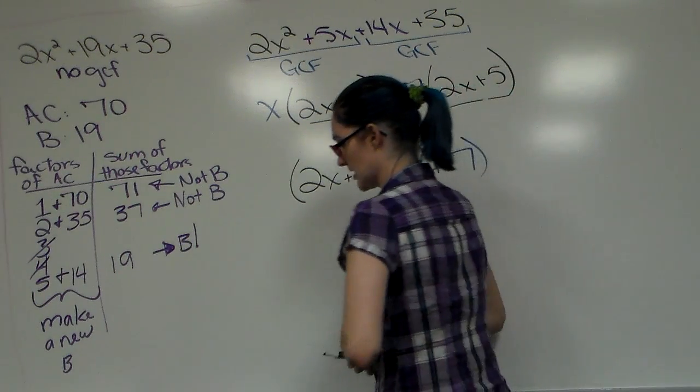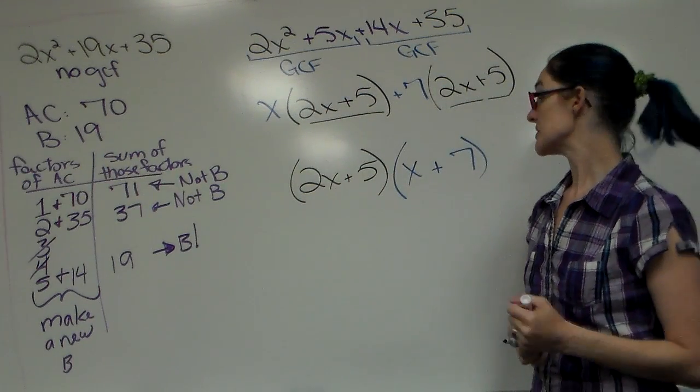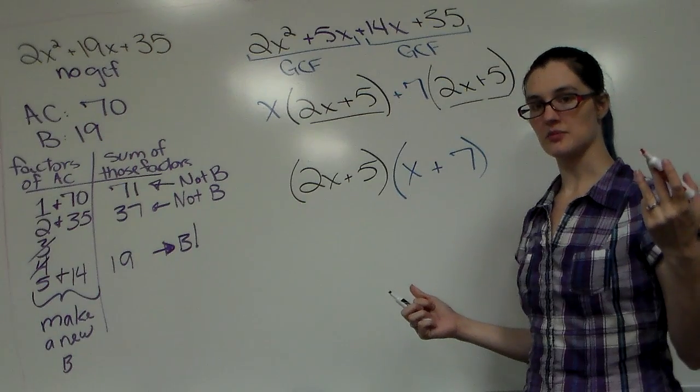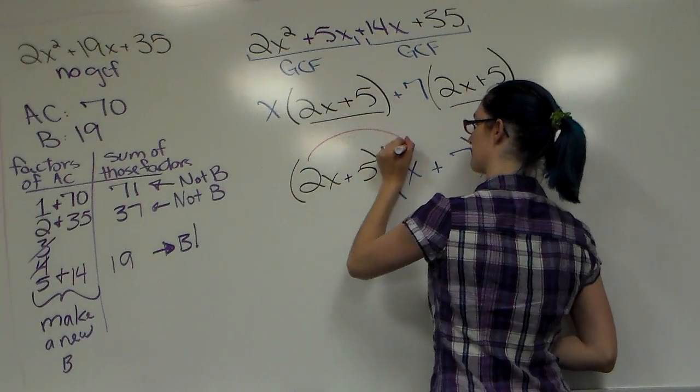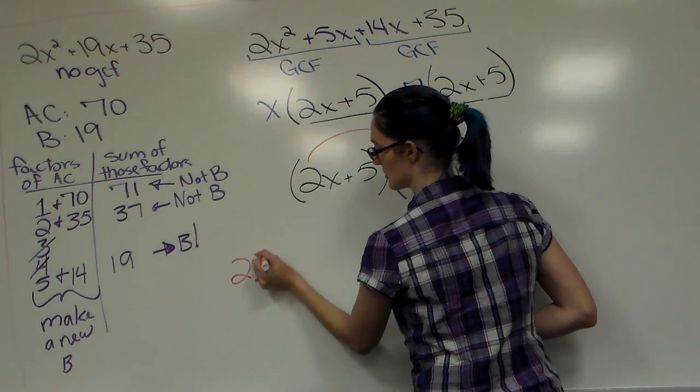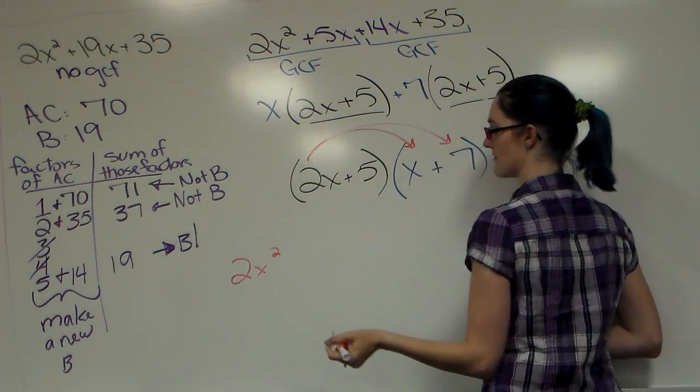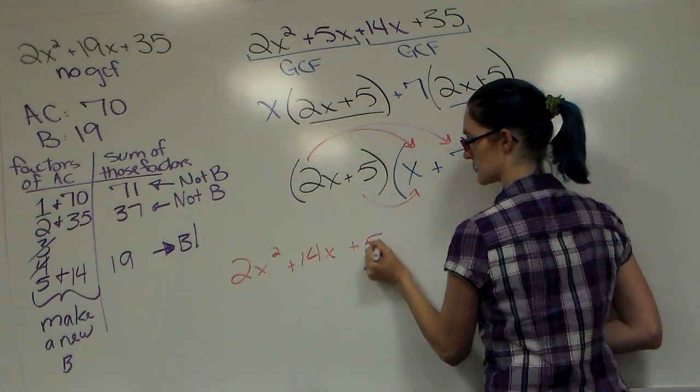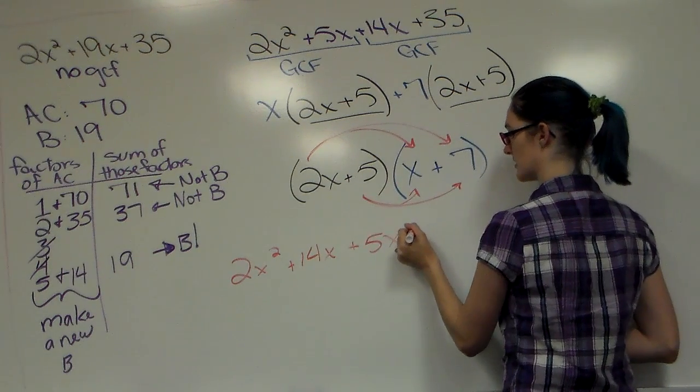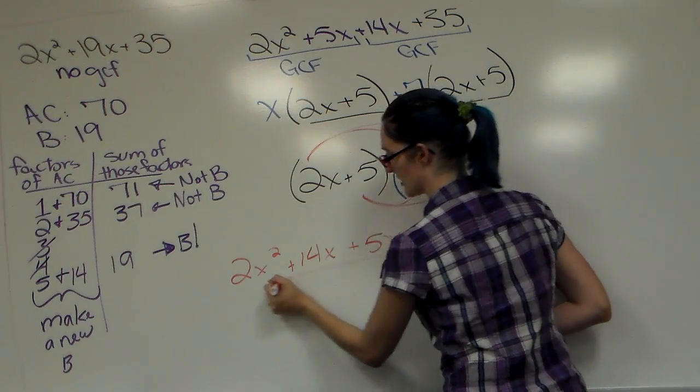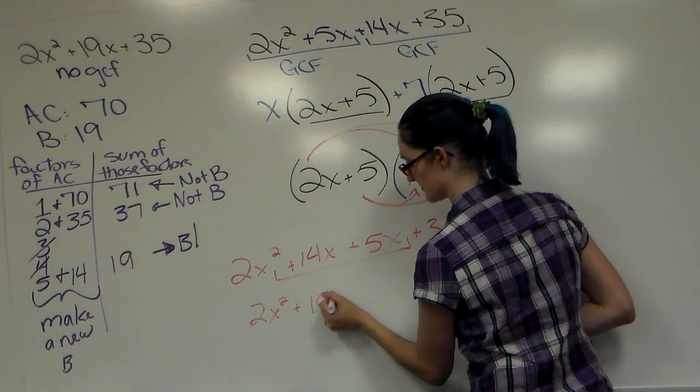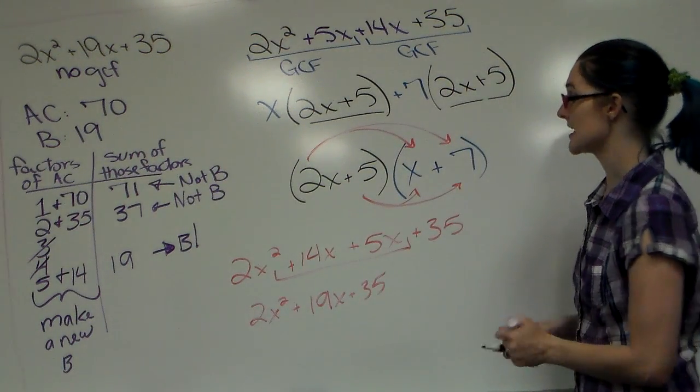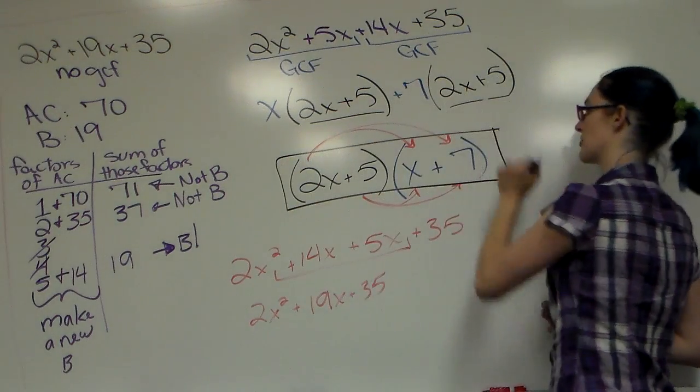Then you have it factored. But factoring is something we struggle with, so it's extremely important that you know how to check your work. You want to make sure you got this problem right before the teacher takes a red pen to it. To check we're going to multiply 2x times x is 2x², 2x times 7 is 14x, 5 times x is 5x, and 5 times 7 is 35. Combine my like terms. Is that what we originally started with? 2x² plus 19x plus 35? Yes.